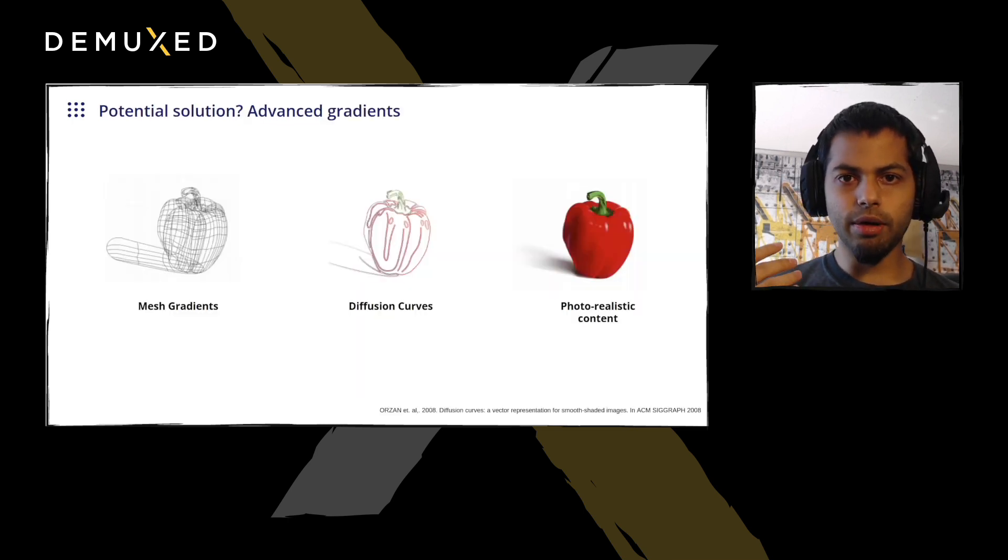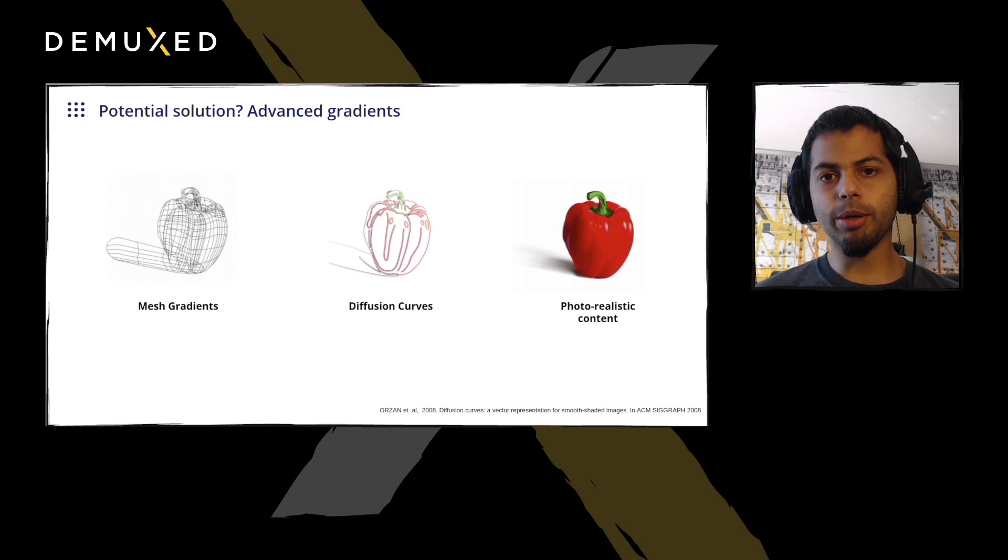Though that doesn't necessarily mean that it's not possible to then render those types of gradients efficiently. Specifically, we've been looking at two types of vector primitives, mesh gradients and diffusion curves, which are vector primitives that are capable of handling efficiently photorealistic content. Both of these techniques were considered as part of the advanced gradient spec of the SVG 2.0 standard. And those are both techniques we're actively looking into right now to see if they may be able to enable efficient handling of clips like BigBuckBunny.